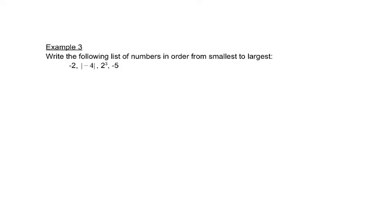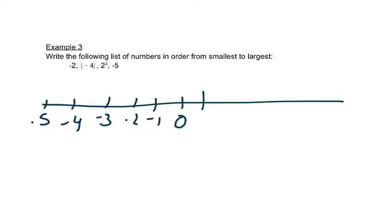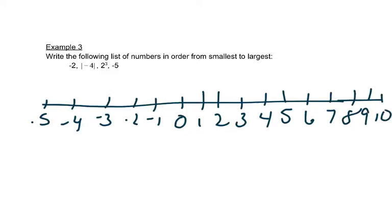In this problem, we're wanting to put these numbers in order from smallest to biggest. So one way to do this is to look at a number line. Let's say this is zero and we'll just draw this out and put some numbers on here. So this first number is negative two. That would be right here on the number line. That's its point or coordinate.